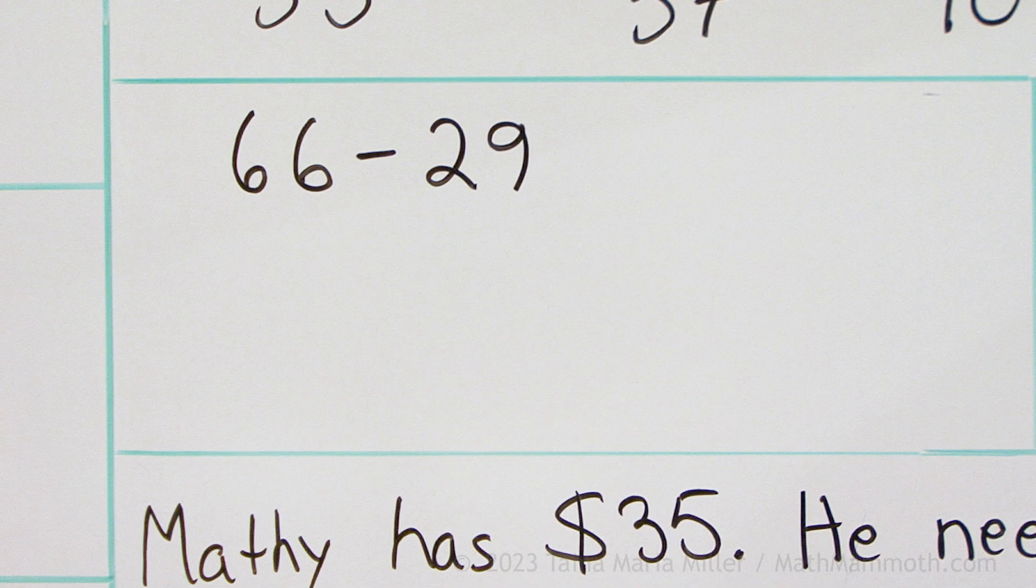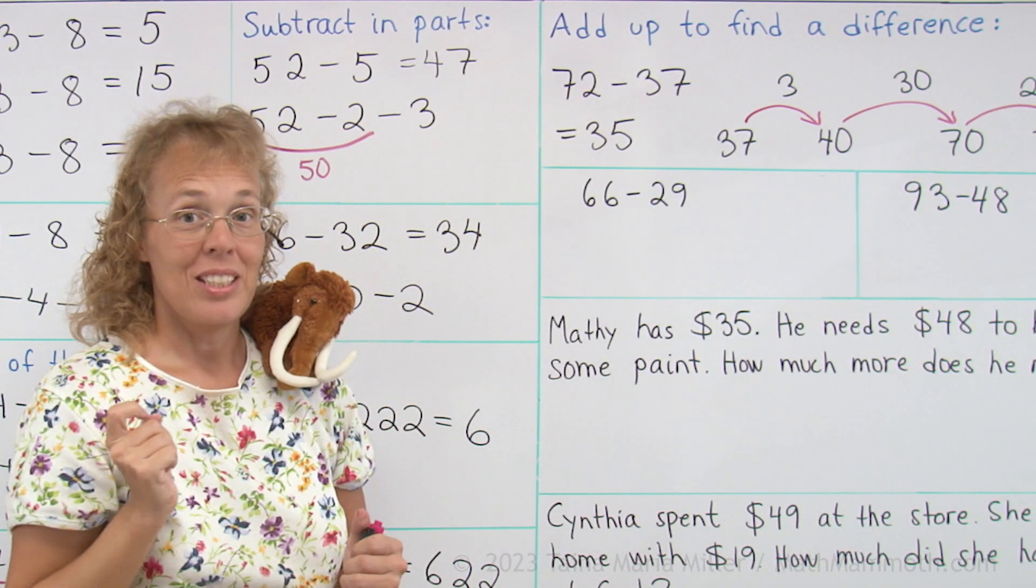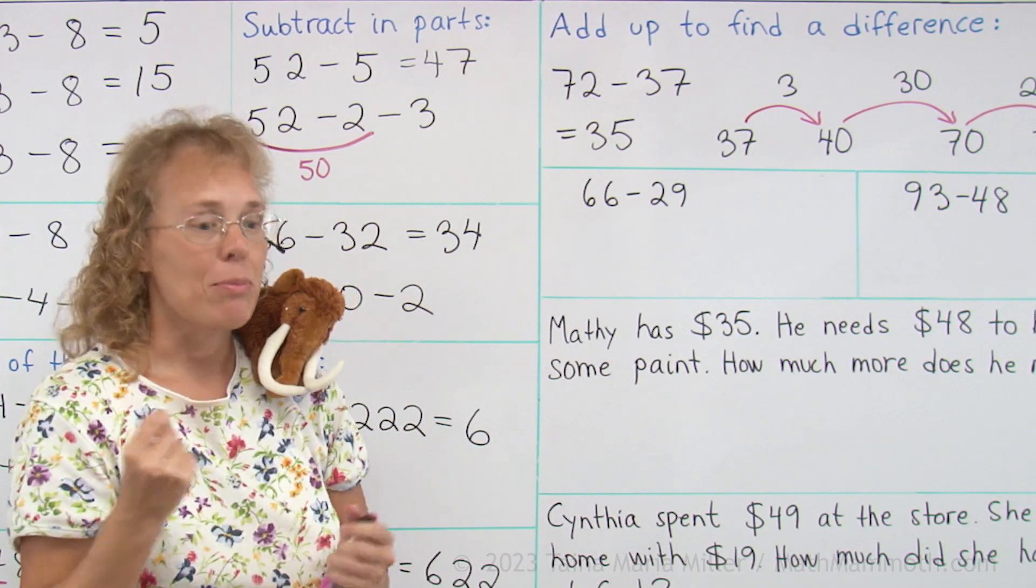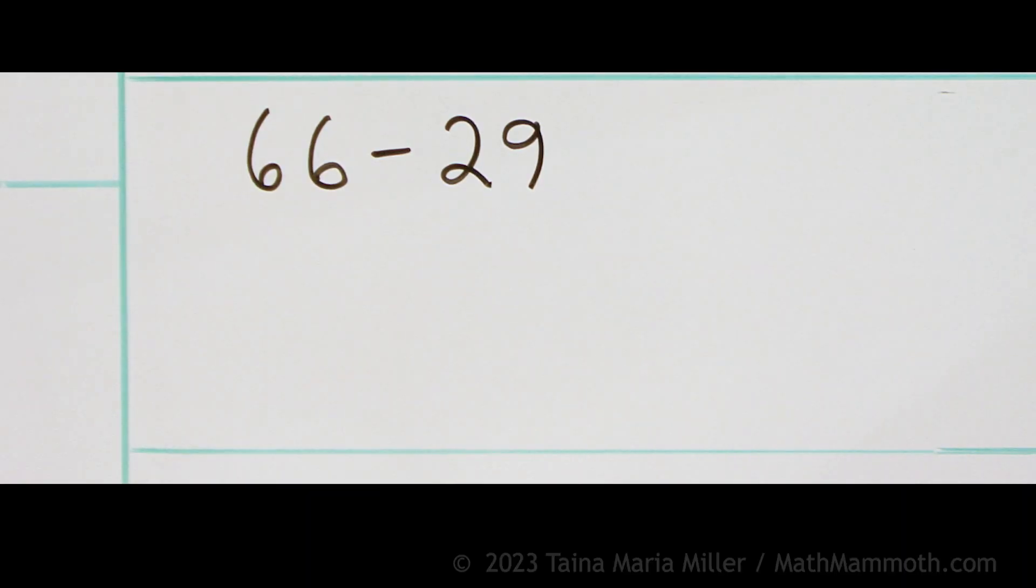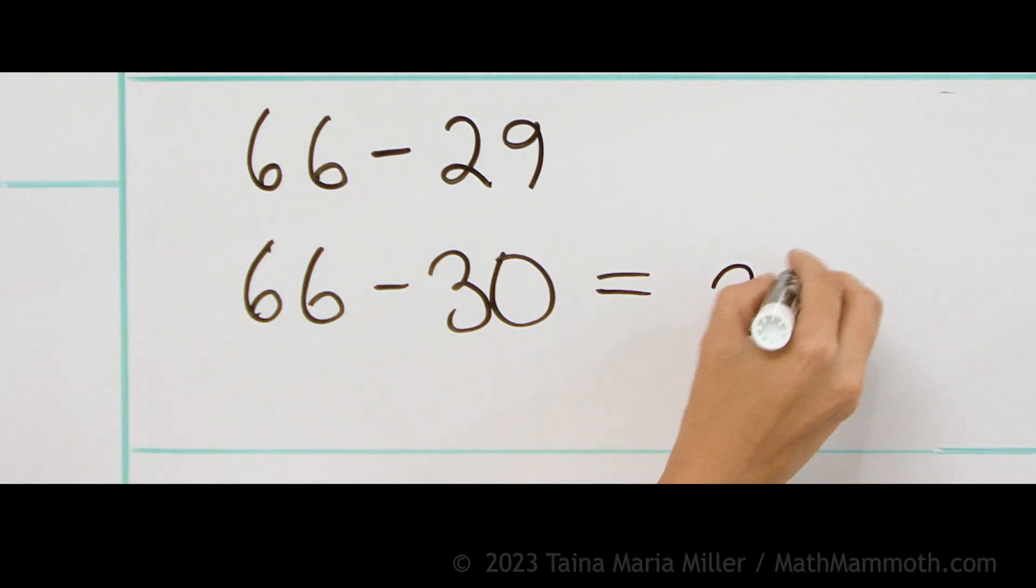66 minus 29. I'm going to show you how to do this using a helping problem where we use an easy number close to 29. Can you think of that? It's 66 minus 30 and that's an easy subtraction problem. The answer is 36.